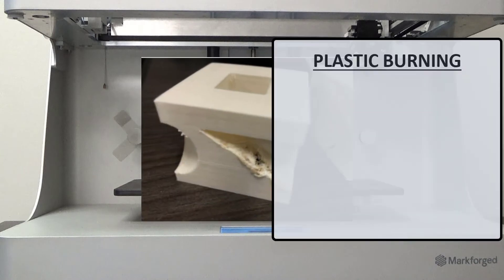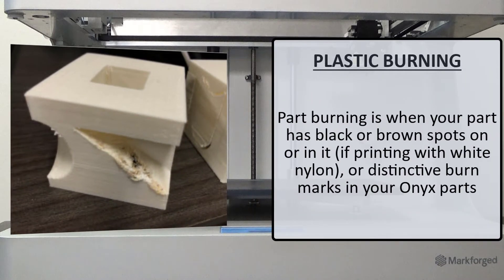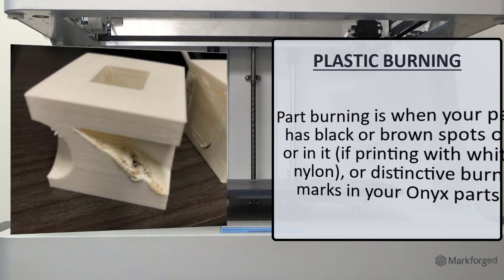What if we experience plastic burning? Plastic burning is where your part has a black or brown spot on it or in it. This is more noticeable when printing with white nylon. However, you can also see some distinctive burn marks in your Onyx parts as well. For the most part, burning is strictly aesthetic and will not affect the strength of your part.